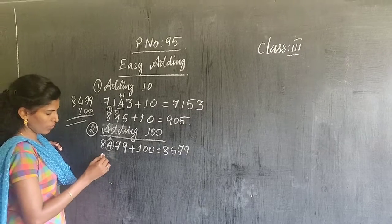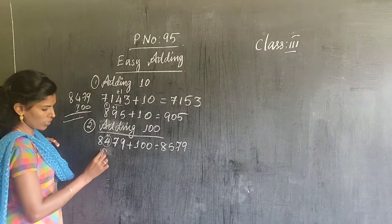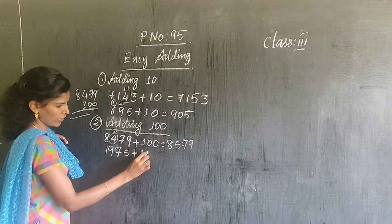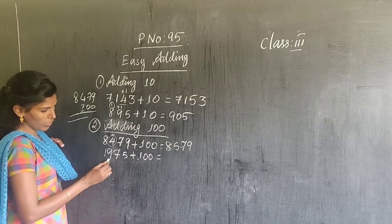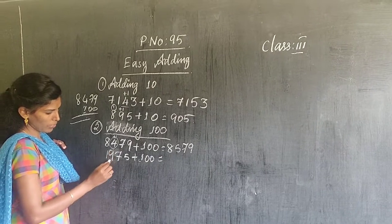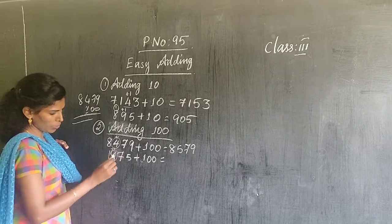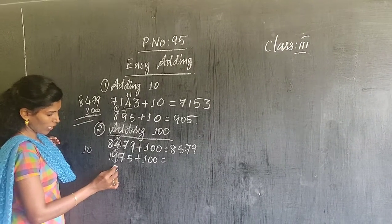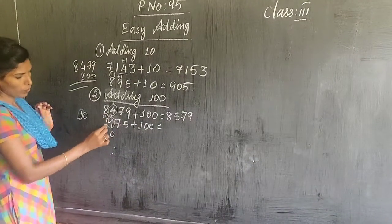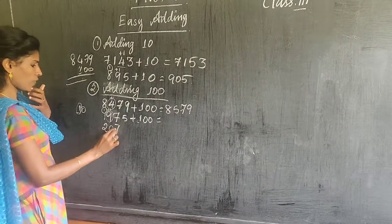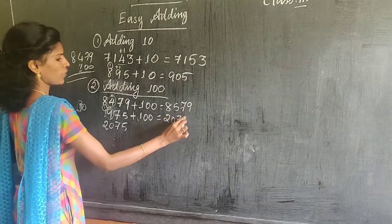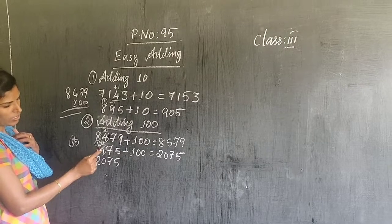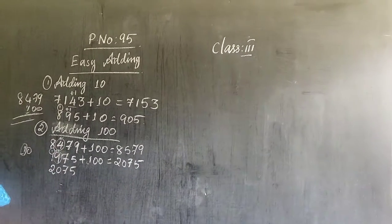Suppose if the hundreds digit is 9, then there will be a change. If the number is 1975 and you have to add 100, the hundreds place must increase by 1. But the hundreds digit is 9, so 9 plus 1 is 10 — you cannot write 10 as it is a 2-digit number. So you write only 0, and carry the 1 to the next digit. So 1 plus 1 is 2, giving 2075. Remember, only when 9 is in that place will the next digit increase; otherwise only the hundreds place increases.